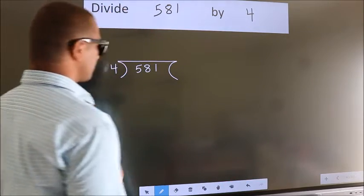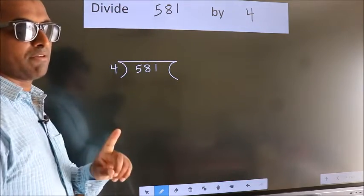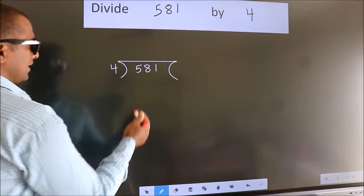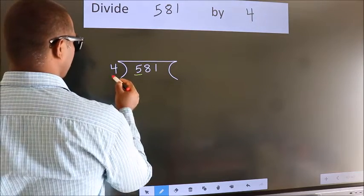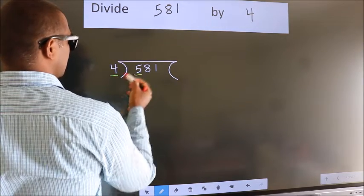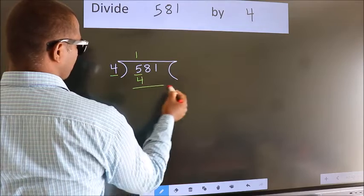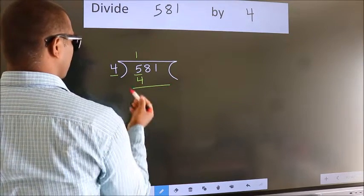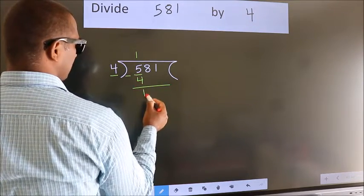This is your step 1. Here we have 5, here 4. A number close to 5 in the 4 table is 4 once 4. Now we should subtract. We get 1.